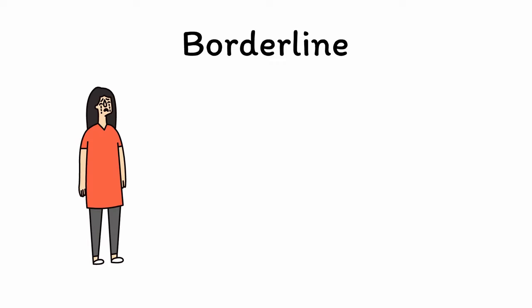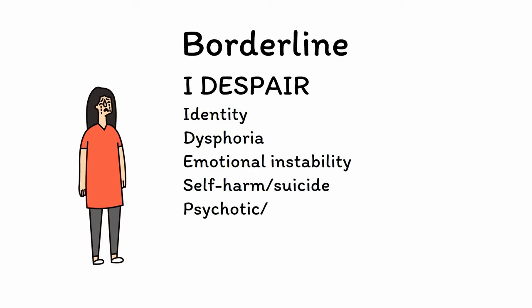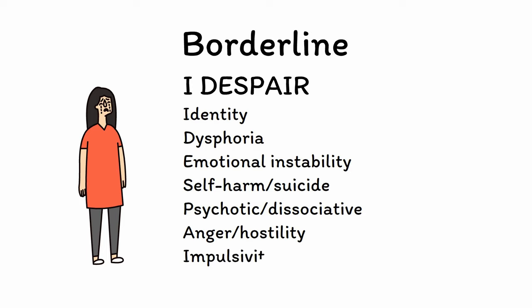Now let's talk about each of the four disorders in more detail, starting with borderline personality disorder, or BPD. BPD is a syndrome of chronic instability in multiple areas of life. The mnemonic I-DESPAIR can be used to remember the core signs and symptoms: identity disturbance and poor self-image, chronic dysphoria and feelings of emptiness, emotional instability with rapid mood swings, a tendency towards suicidal acts and self-harm, psychosis-like or dissociative symptoms especially during stress, chronic anger and hostility, recurrent impulsivity, and unstable relationships characterized by sensitivity to rejection, frantic efforts to avoid abandonment, intolerance of being alone, and splitting.